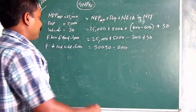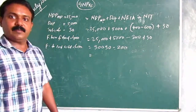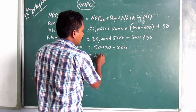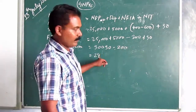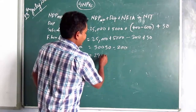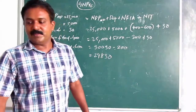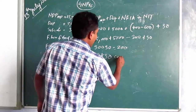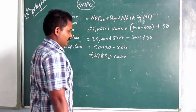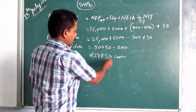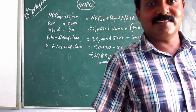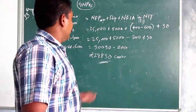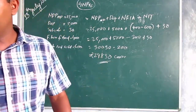So: 25,000 plus 5,000 plus NFIA components, then applying indirect tax and subsidies adjustments, you reach your answer of 30,830 crores. Reach your answer very easily. I hope you understood this numerical as well.